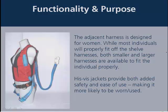When choosing personal fall protection equipment, functionality and purpose must be included in the decision. There are harnesses designed specifically for women, and both smaller and larger harnesses are available to fit individuals properly. High visibility jackets add both safety and ease of use, making the equipment more likely to be worn. Choosing a system that is easy to use will make it more likely to be worn when a fall occurs.